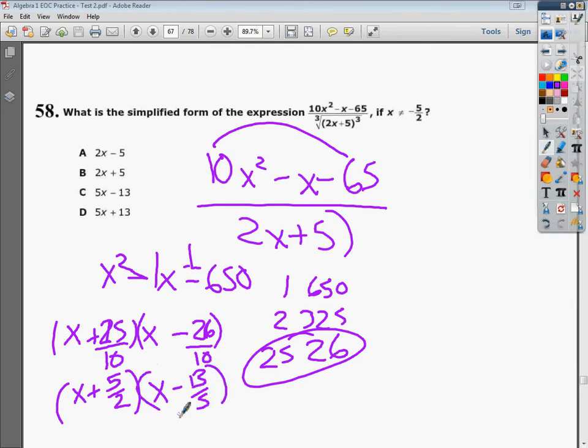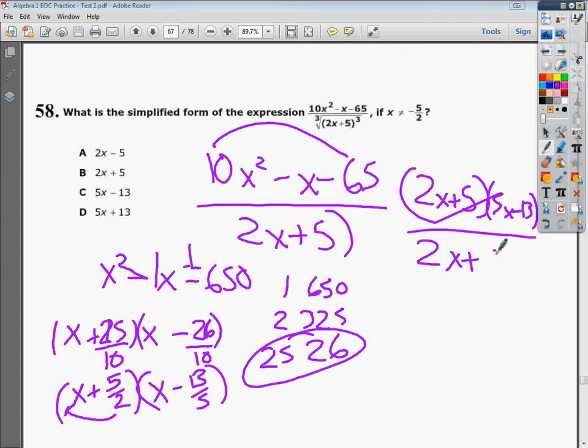And if you didn't know, you can't leave fractions there. So you just bump the 2 back up here. So the new top part becomes 2x plus 5 times 5x minus 13 over 2x plus 5. That's the factoring part. These cancel now. And all I'm left with is 5x minus 13. So I can say that the answer to number 58 is C.